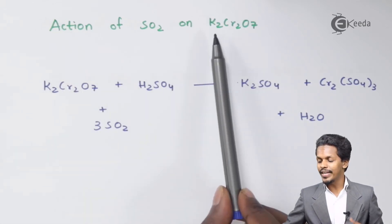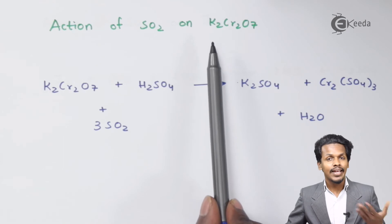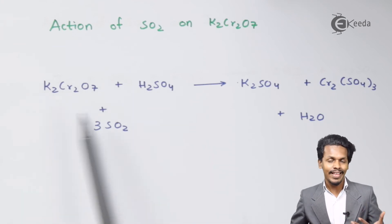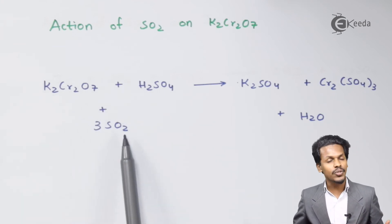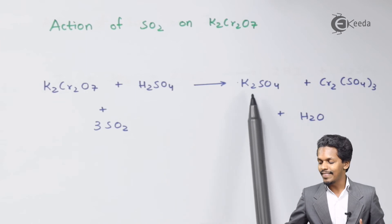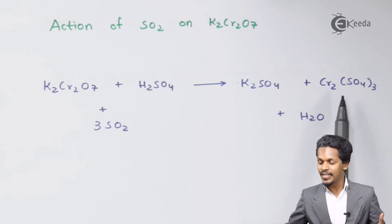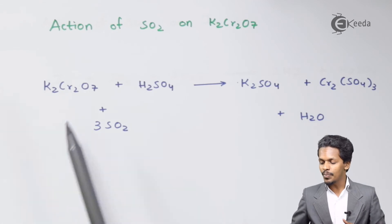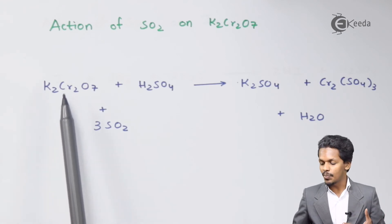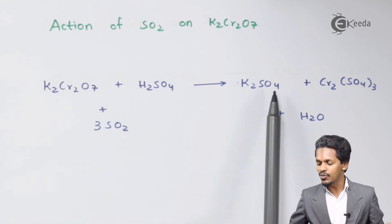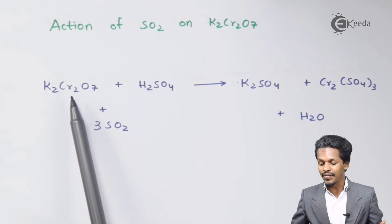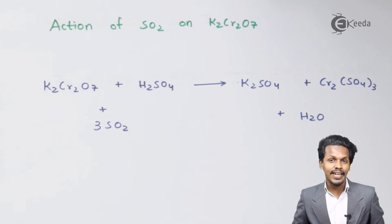The next is the action of SO2 on K2Cr2O7, known as potassium dichromate. When potassium dichromate is treated with H2SO4 in acidic conditions along with 3 moles of SO2, the products are K2SO4 (potassium sulfate) and Cr2(SO4)3 (chromium sulfate) along with H2O. This again shows SO2 acting as a reducing agent with potassium dichromate as the oxidizing agent.